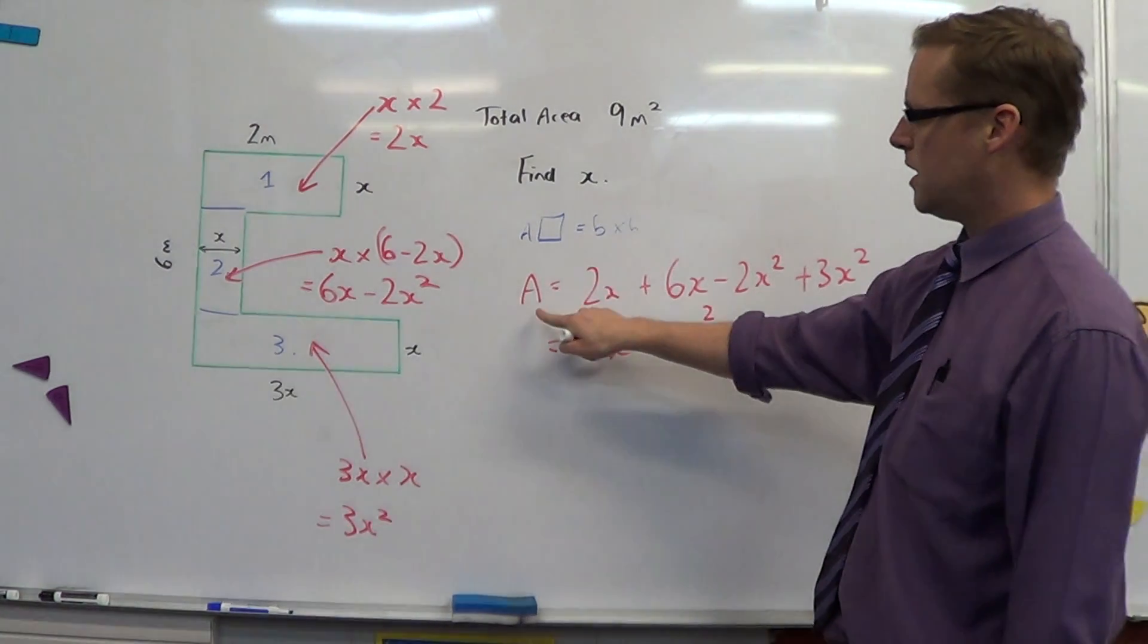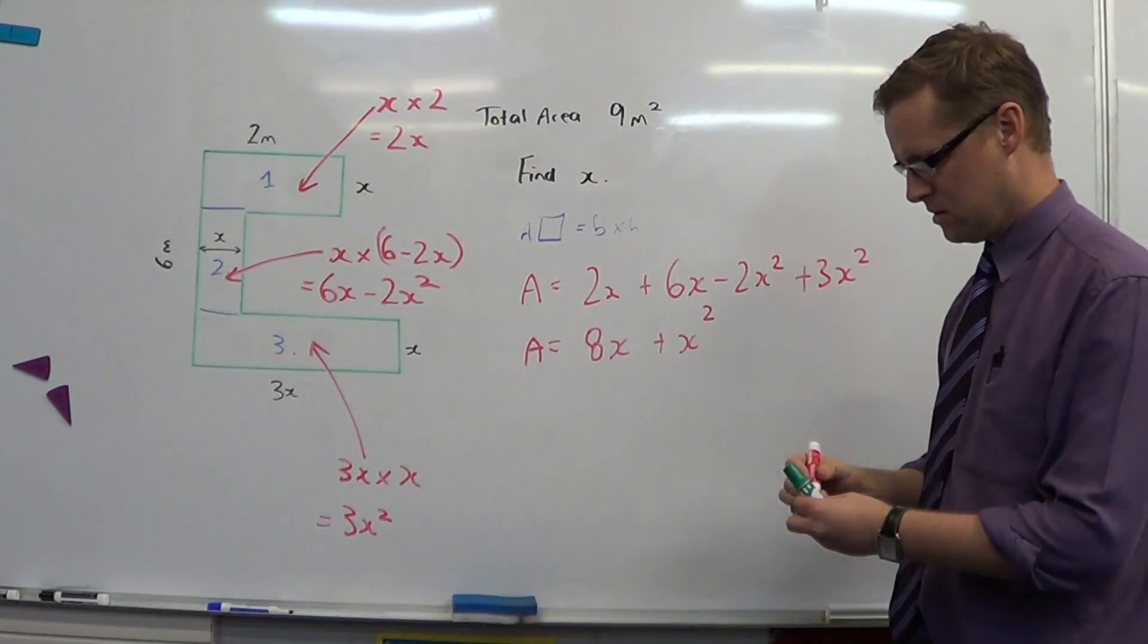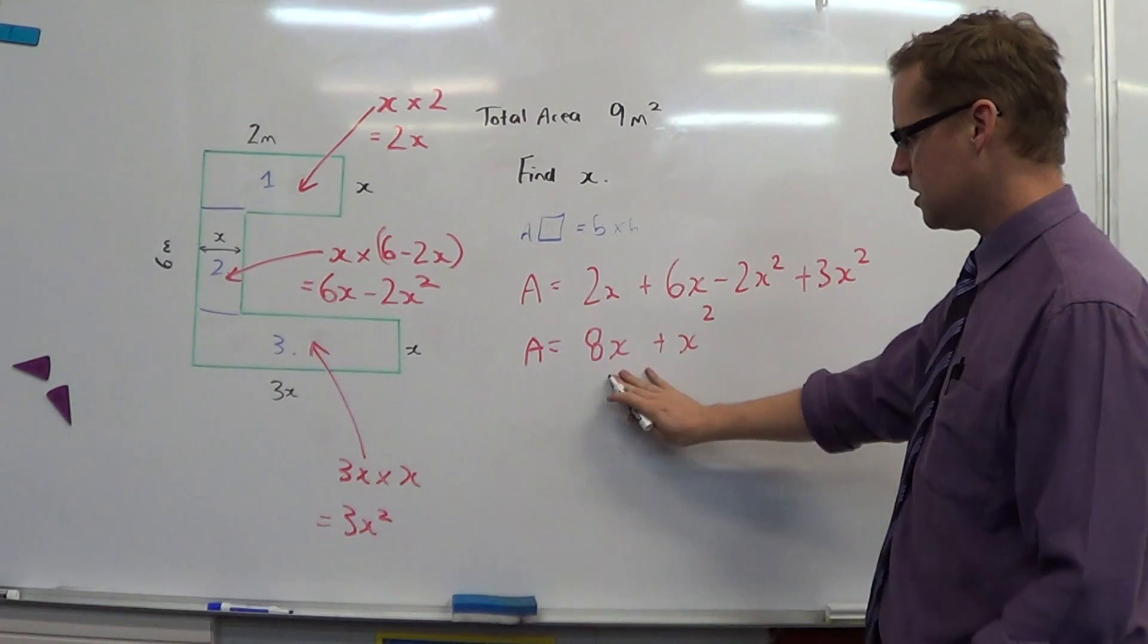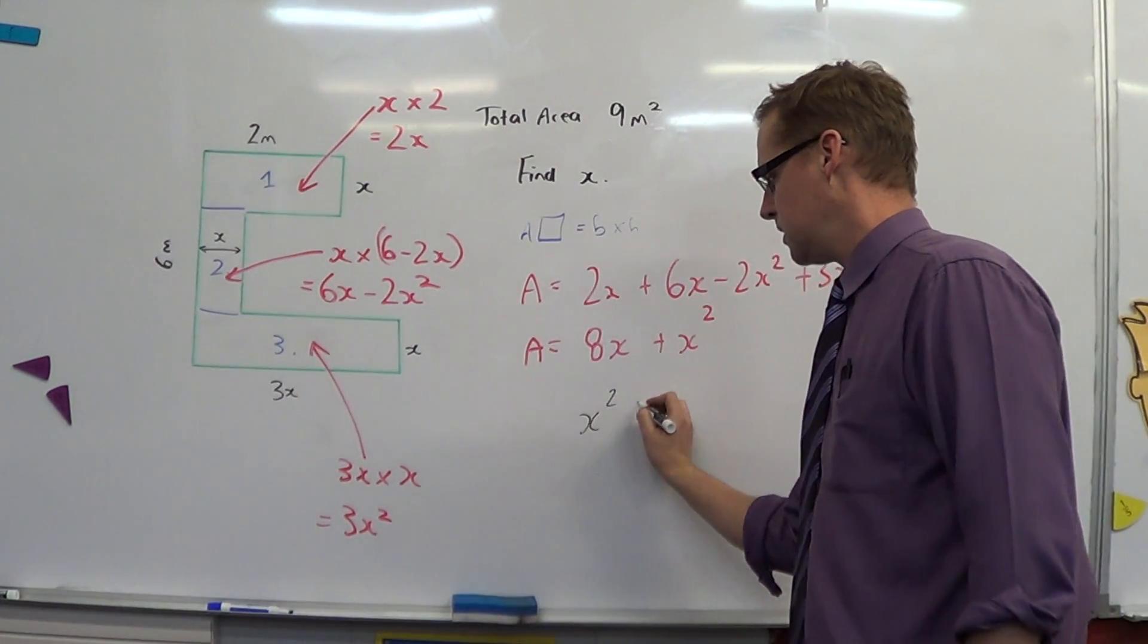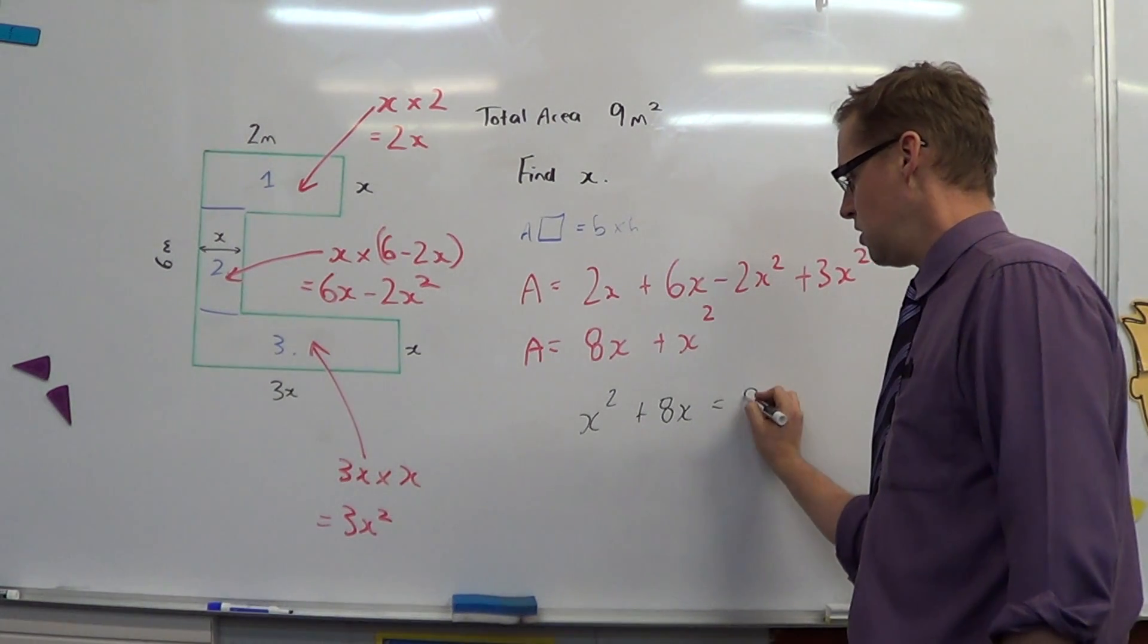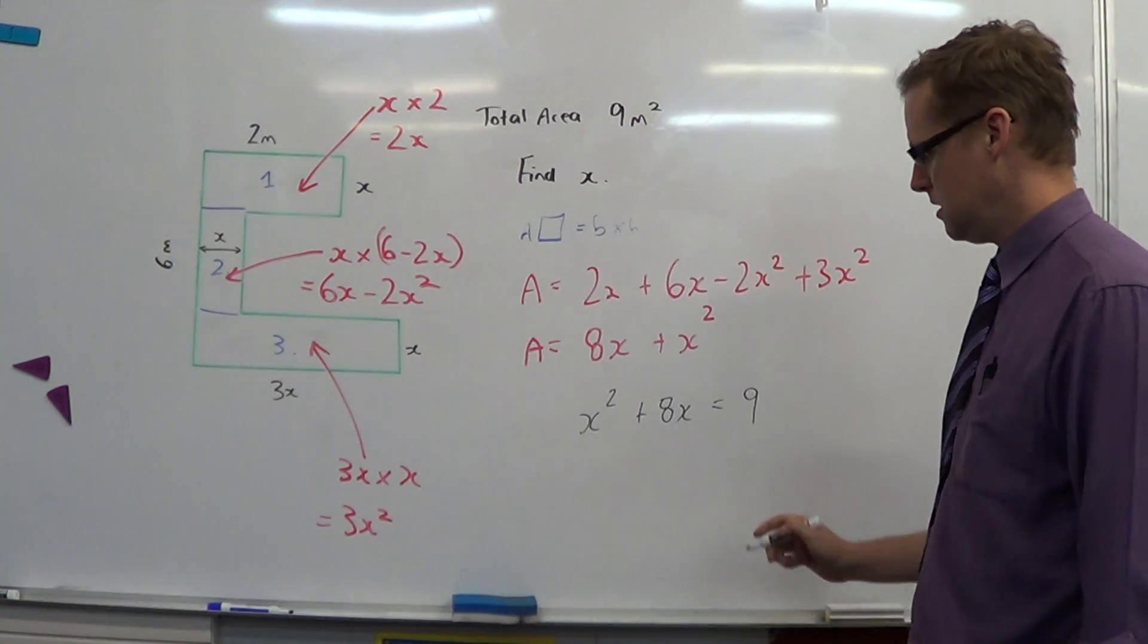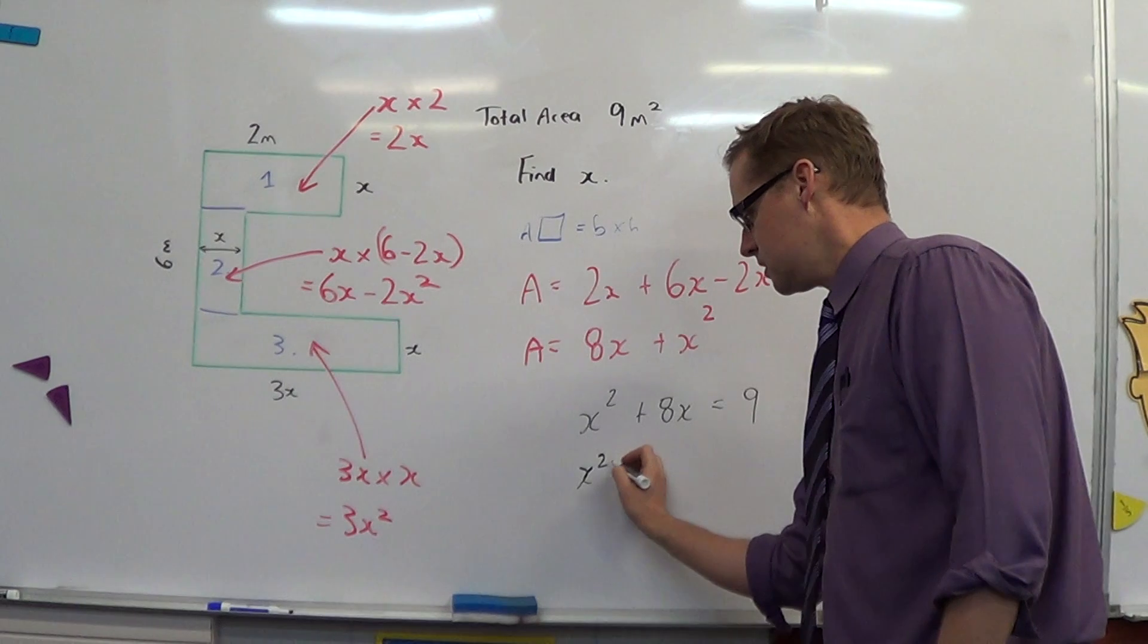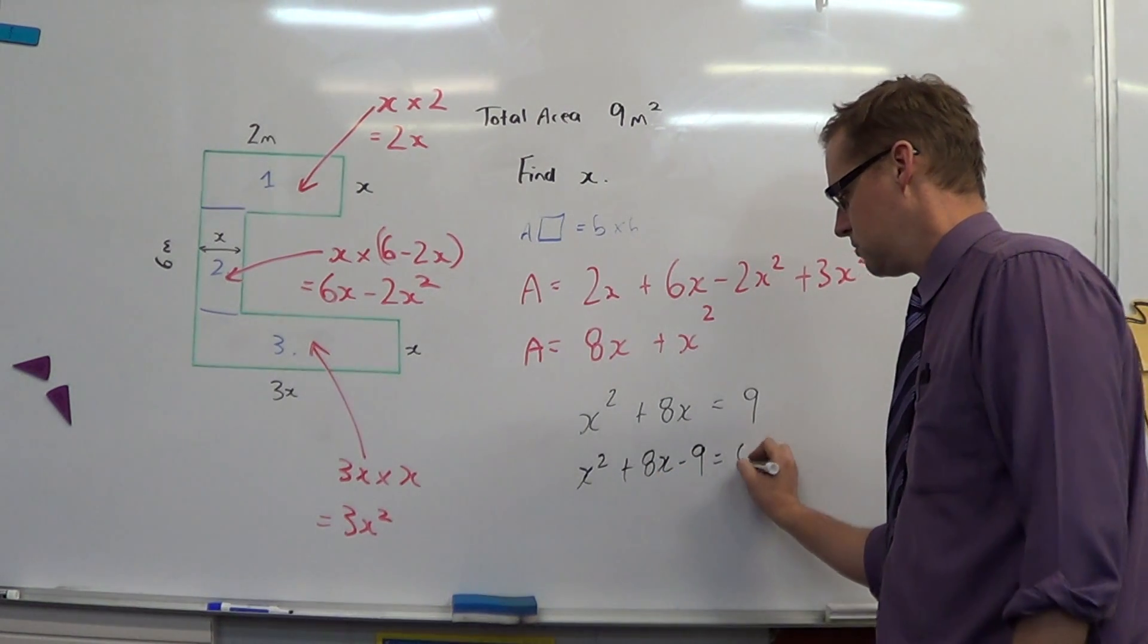And we're told that our area is worth 9. When I put this equation with that value, x squared plus 8x equals 9. The area equals 9, so x squared plus 8x minus 9 equals 0.